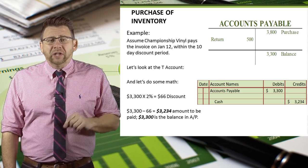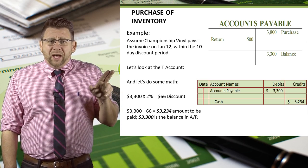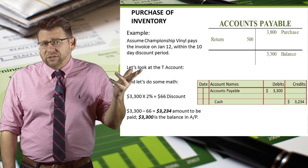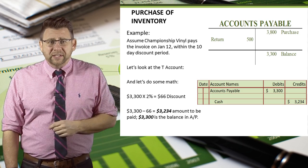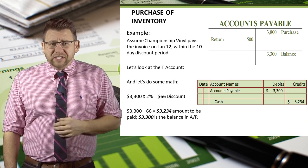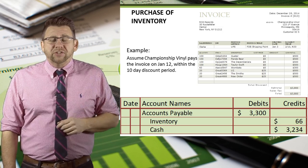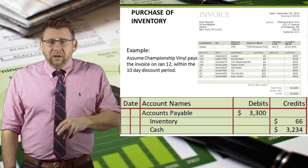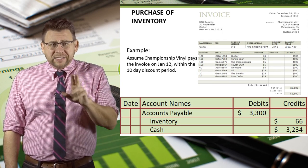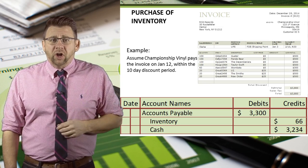Notice that accounts payable needs to be debited for $3,300. If we were to debit only the cash amount, our records would show that we still owe $66 when we do not. So this journal entry is out of balance — we need a credit of $66 to make it balance, and that credit is to the inventory account. Again, it's not because physical units were reduced, but the cost of inventory was reduced because we took the discount, which lowered our overall cost.